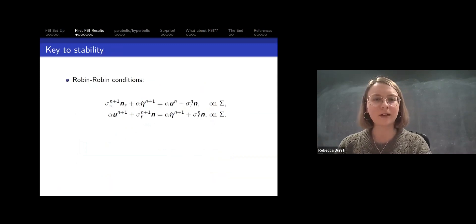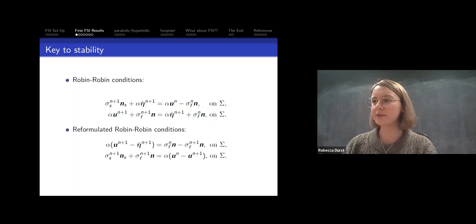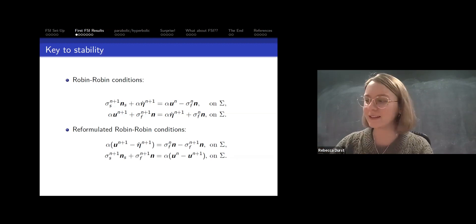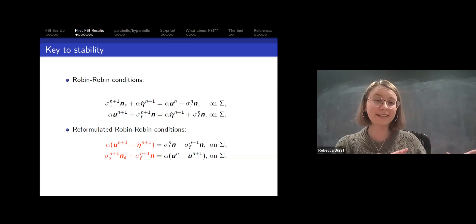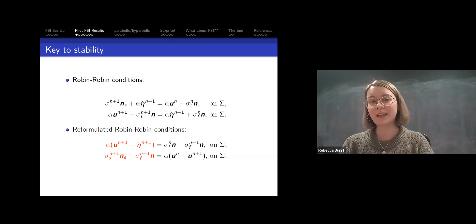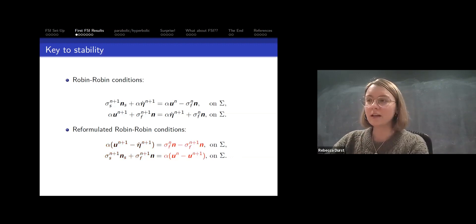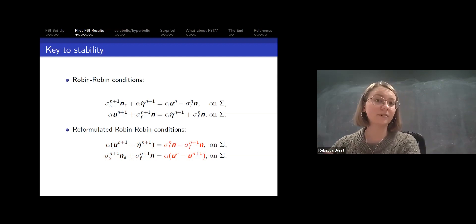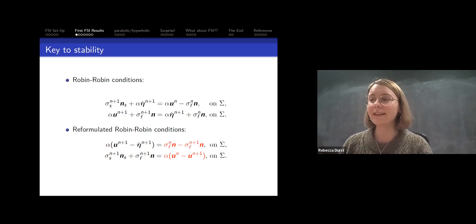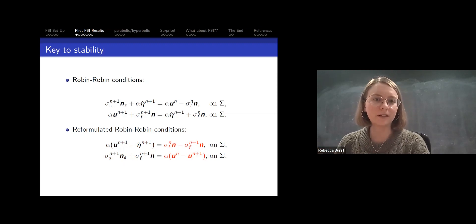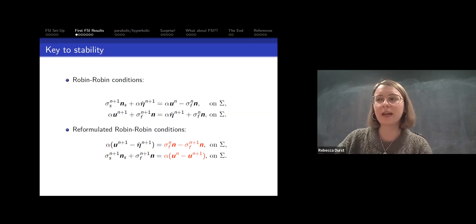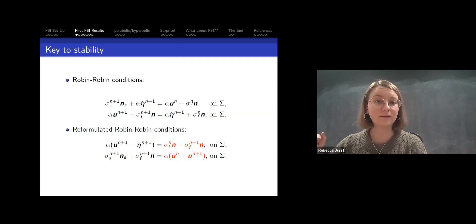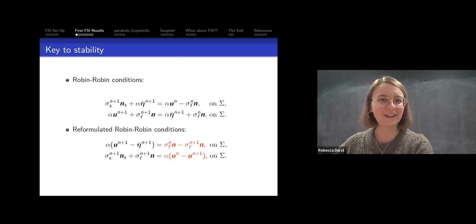The key to stability is that you can rewrite and add those Robin interface conditions together. On the left-hand side you recover the original dynamic and kinematic coupling conditions — equal to zero for the exact solution. On the right-hand side you end up with time differences that we are able to control in our stability proof. That's the key to proving stability of the Robin-Robin splitting method. This does mean we need to be careful during spatial discretization, since the velocity appears set equal to a derivative of velocity; I refer you to our publications for the details.